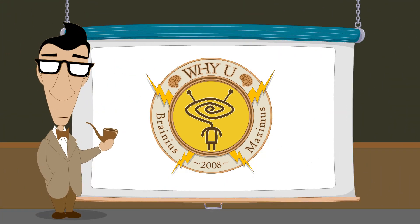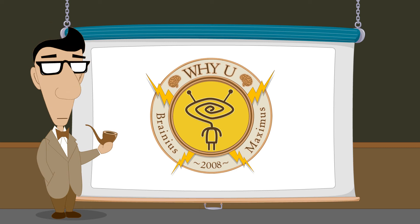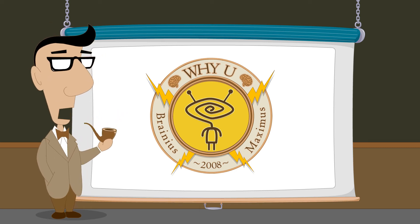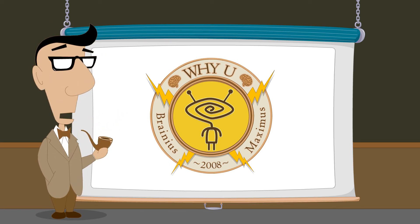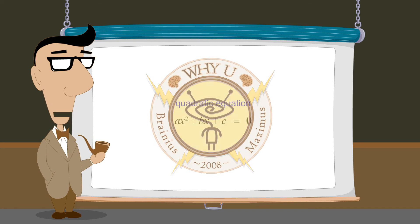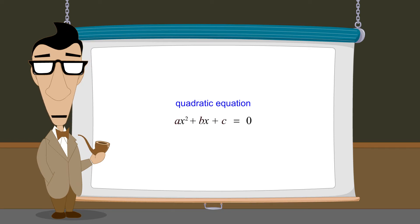Hello. I'm Professor Von Schmohawk and welcome to Why U. We have seen that single-variable quadratic equations can always be put into the standard form ax-squared plus bx plus c equals zero, where a, b, and c are constants.